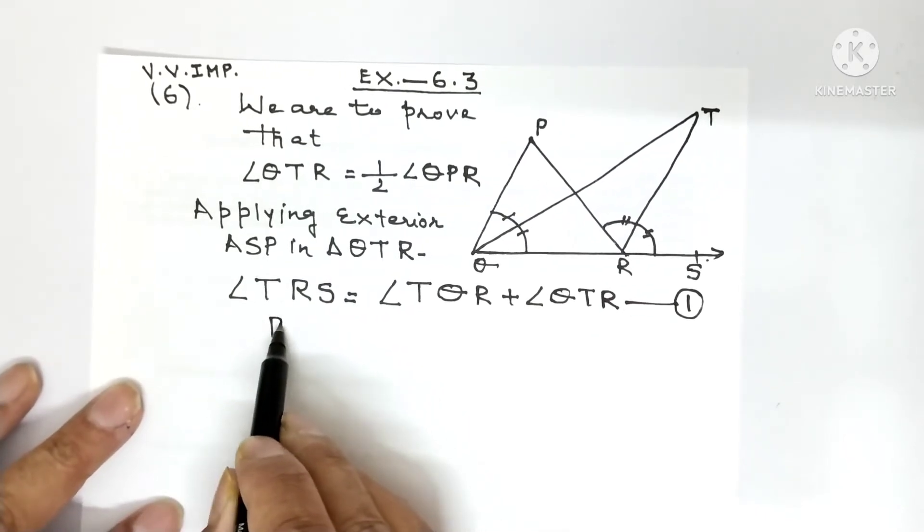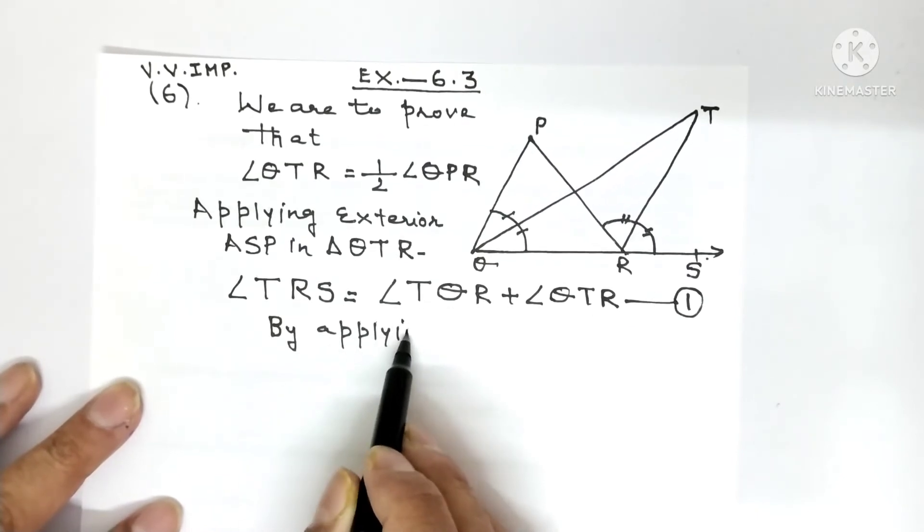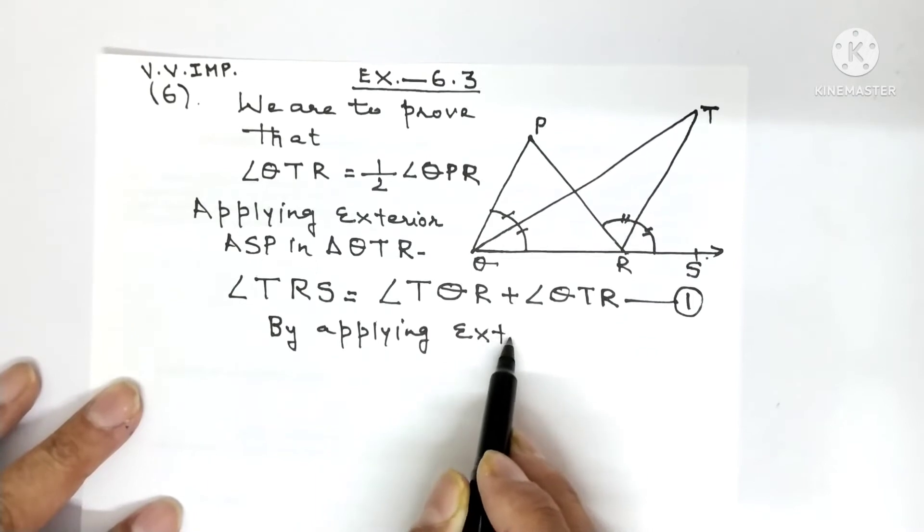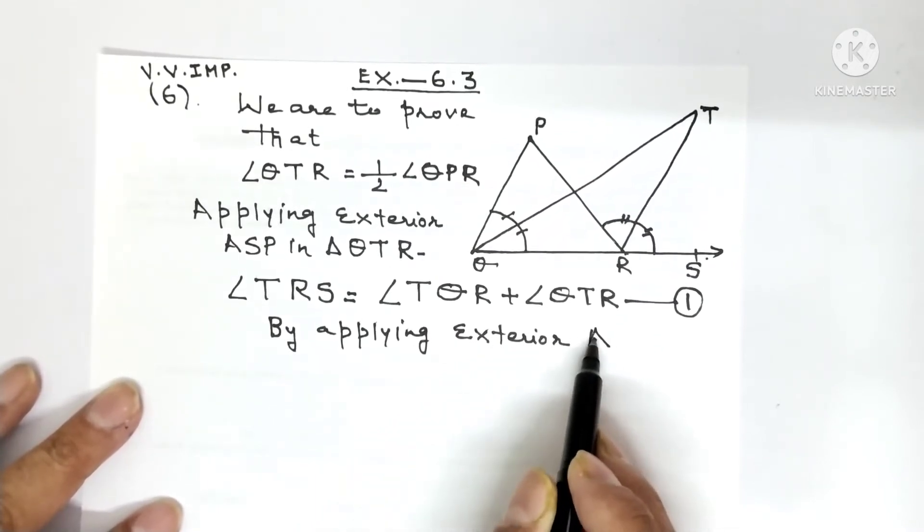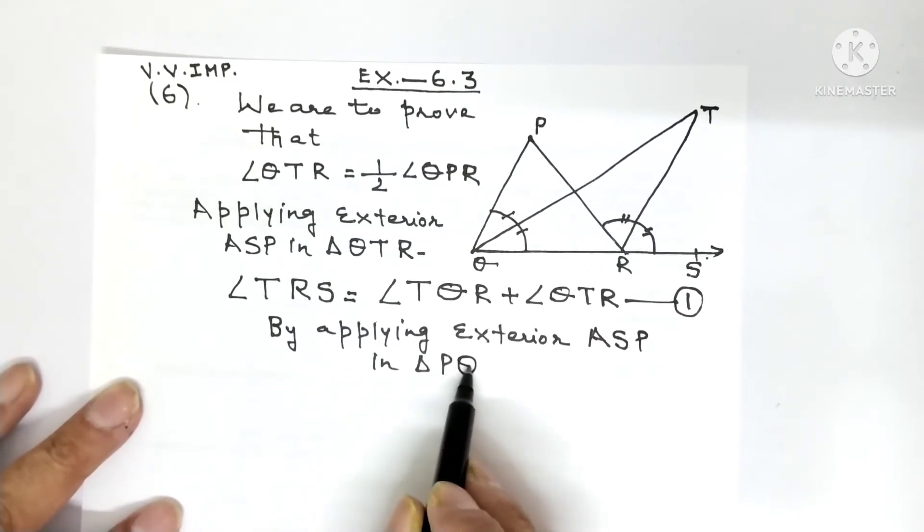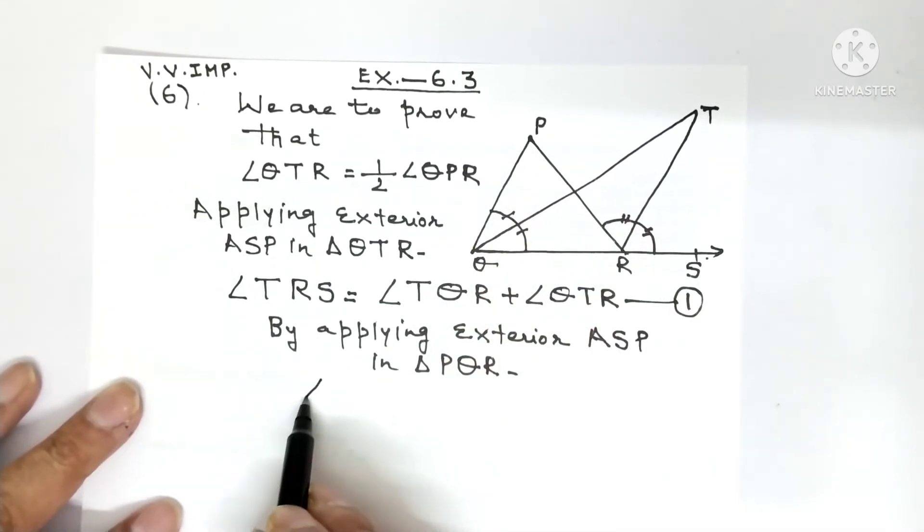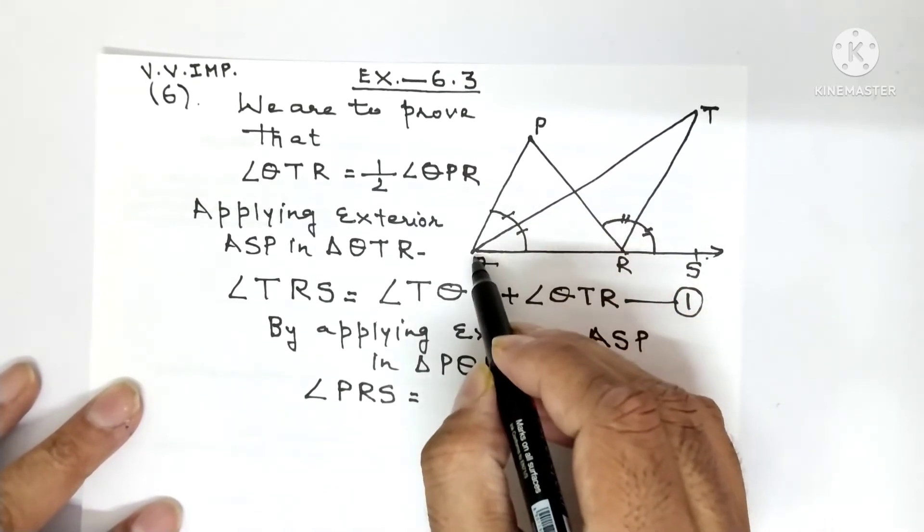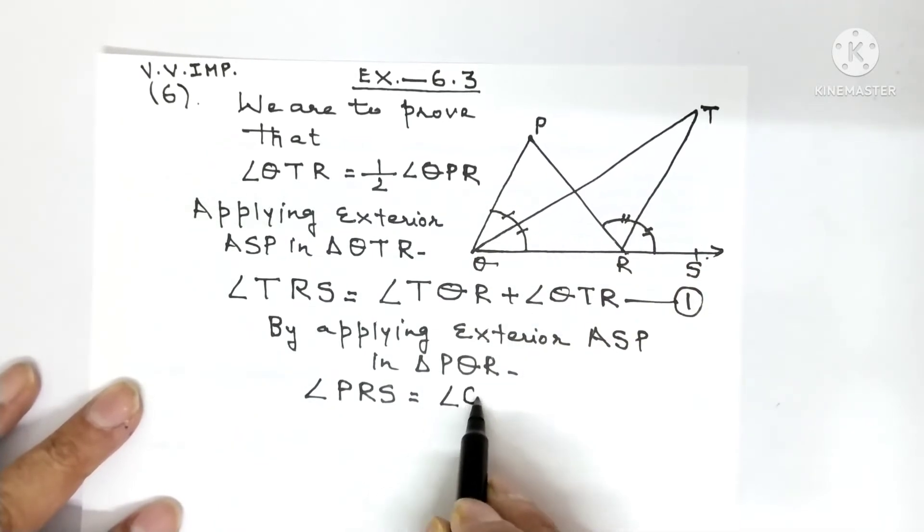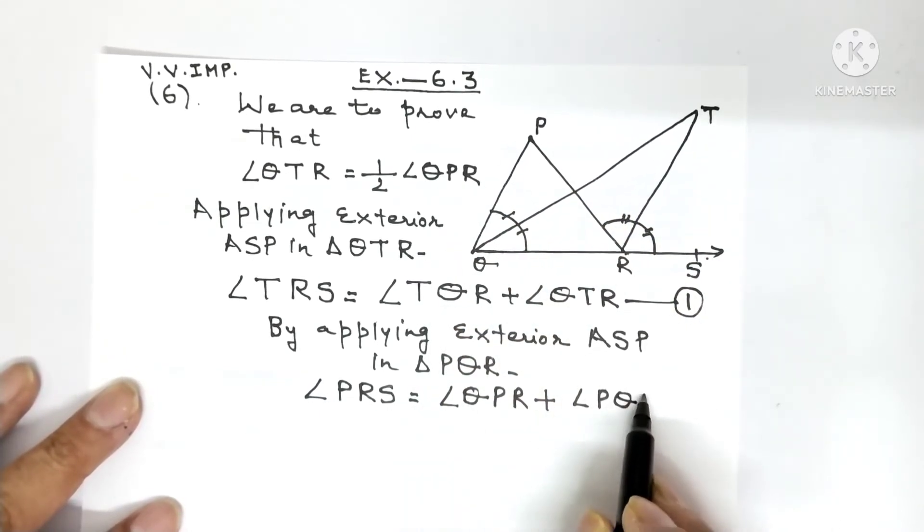Now by applying exterior angle sum property in triangle PQR. If you apply exterior angle sum property in PQR, then angle PRS is equal to angle QPR plus angle PQR.